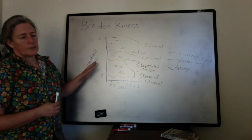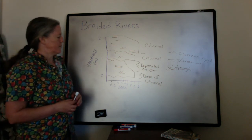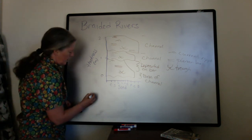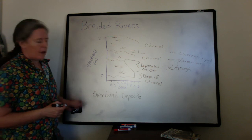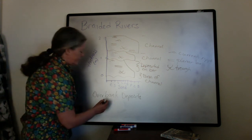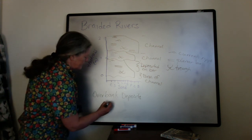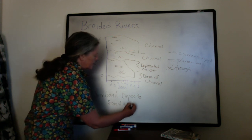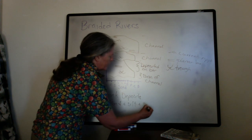So that's the channel facies themselves. But we also have overbank deposits. And so the overbank deposits, because the water is still flowing, usually consist of sand and silt plus soil.